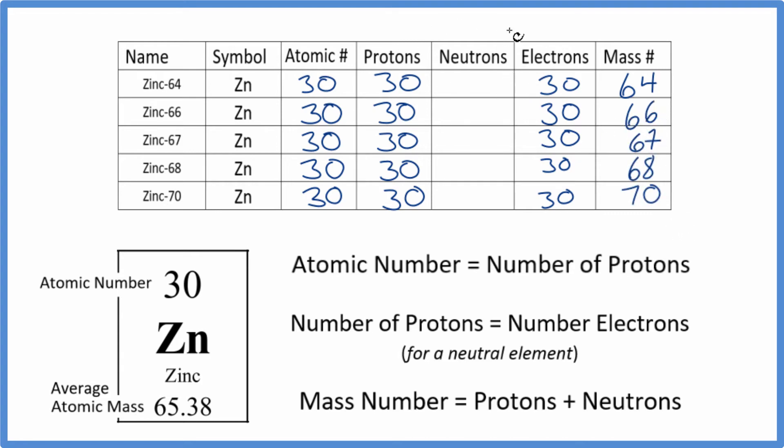If we want to figure out the number of neutrons and we have the mass number, we know the mass number equals protons plus neutrons. So 30 plus some number gives us the mass number. 30 plus 34. Here, the mass number is 66. 30 plus something gives us 66. Or you could say that 66 minus 30,